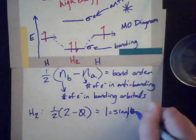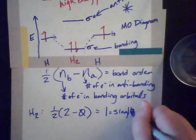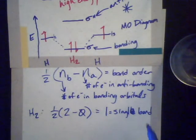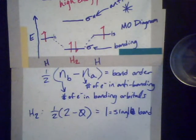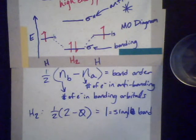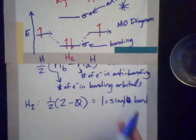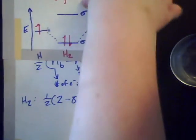For our hydrogen example with H2: the number of electrons in bonding orbitals is two, minus zero electrons in anti-bonding orbitals, and one-half of two equals one — which means a single bond forms between the hydrogens. The bond order tells us how many bonds will form and why covalent bonds form between particular atoms and why they don't between others.